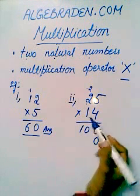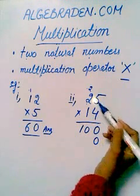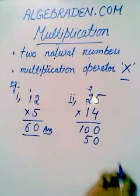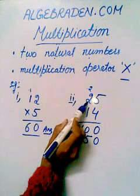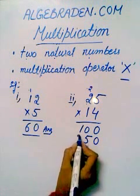Now write the product of 1 into 5 which is 5. Now multiply 1 with the next digit which is 2. 1 into 2 is 2.